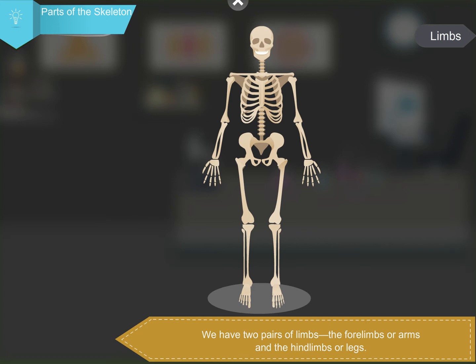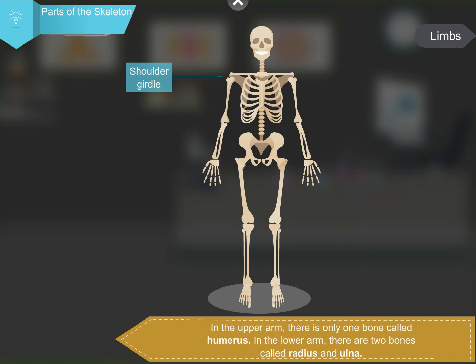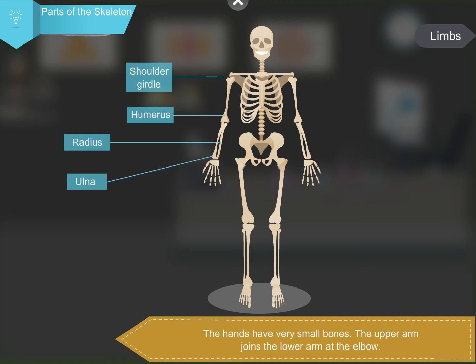We have two pairs of limbs: the forelimbs or arms, and the hindlimbs or legs. The bones of the forelimbs are joined to the spine by the shoulder girdle and the collar bones. In the upper arm, there is only one bone called humerus. In the lower arm, there are two bones called radius and ulna. The hands have very small bones. The upper arm joins the lower arm at the elbow.